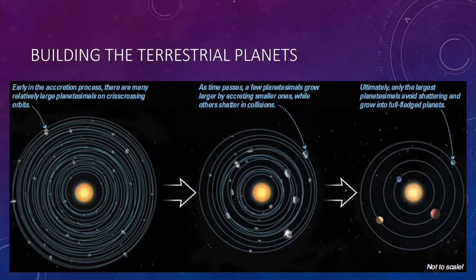However, once planetesimals reached relatively large sizes, further growth actually became more difficult. Gravitational encounters between planetesimals tended to alter their orbits, particularly those of smaller ones. With different orbits now crossing one another, collisions tended to occur at higher speeds and became more destructive, tending to shatter planetesimals rather than help them grow. Only the largest planetesimals avoided being shattered and could grow into our terrestrial planets.